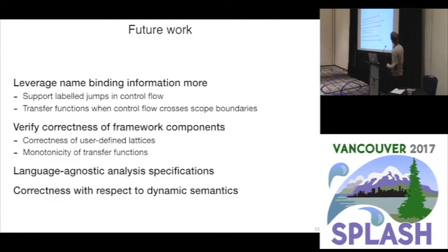I mentioned the number of properties that the framework requires like correct lattices and monotonicity of transfer functions. I don't actually check that yet, so that's also something that should probably be added. But I'd like to try to find a way to do language agnostic analysis specifications, because if you take two languages that are pretty close to each other and you compare the FlowSpec specifications of the same analysis, then they're basically identical. So it seems like we should be able to extract something that's language agnostic or maybe language parametric.